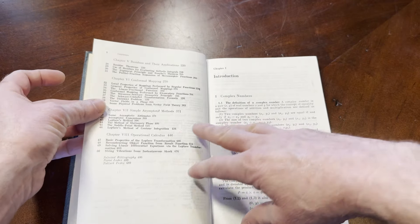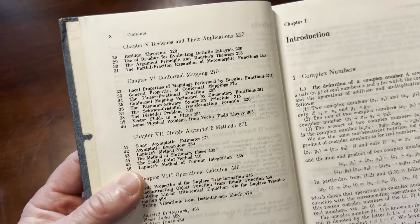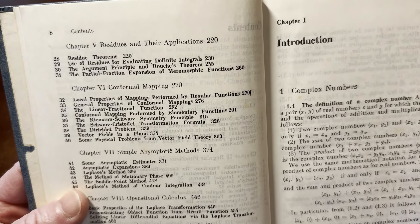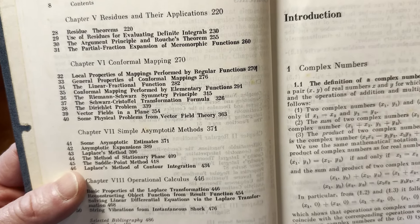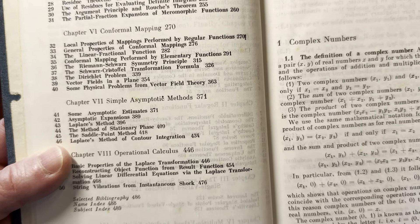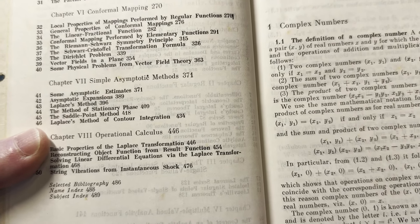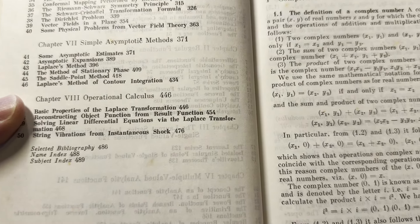Chapter 4 is on multiple-valued analytic functions. And that's typically the case for these types of books. Chapter 5 is residues and their applications. Chapter 6 is conformal mapping. And then 7 is simple asymptotic methods. And 8 is operational calculus.